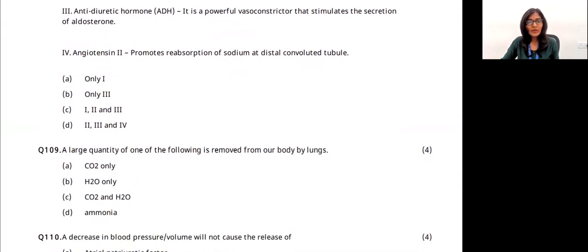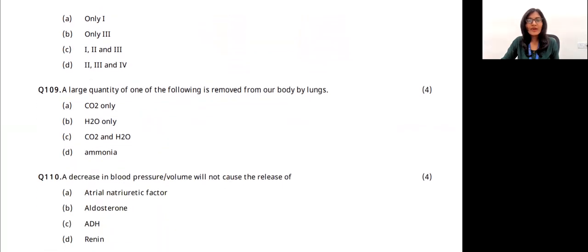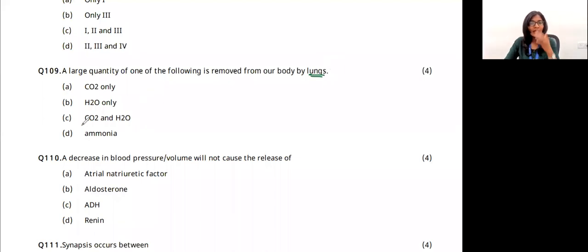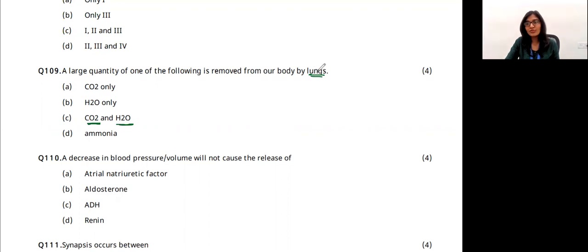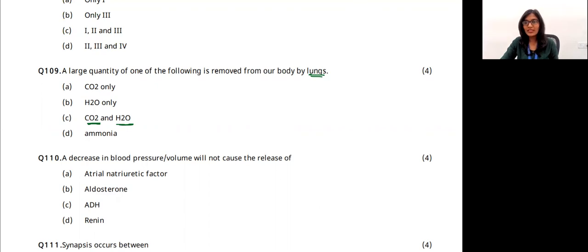A large quantity of one of the following is removed from the body by lungs. Lungs play a very important role — they remove carbon dioxide and water. The answer for this question is option C.